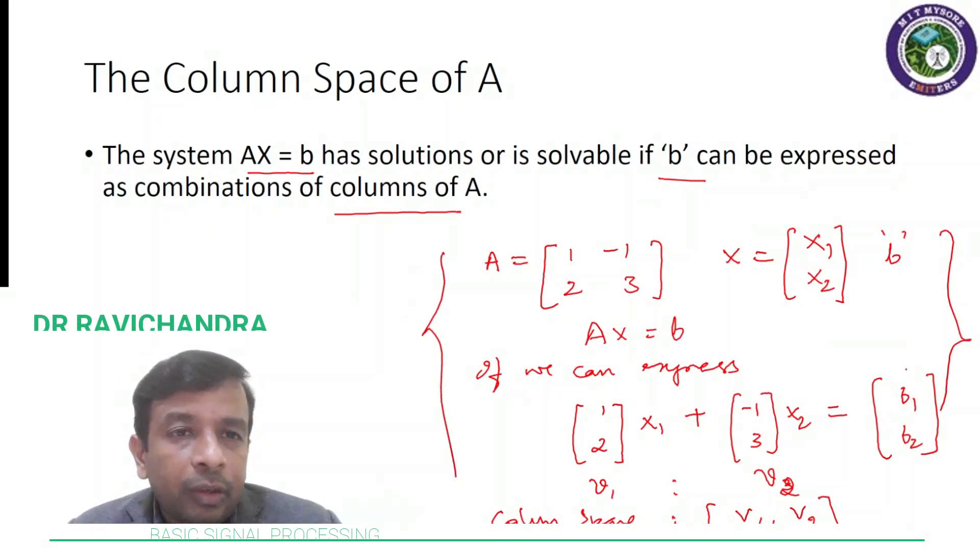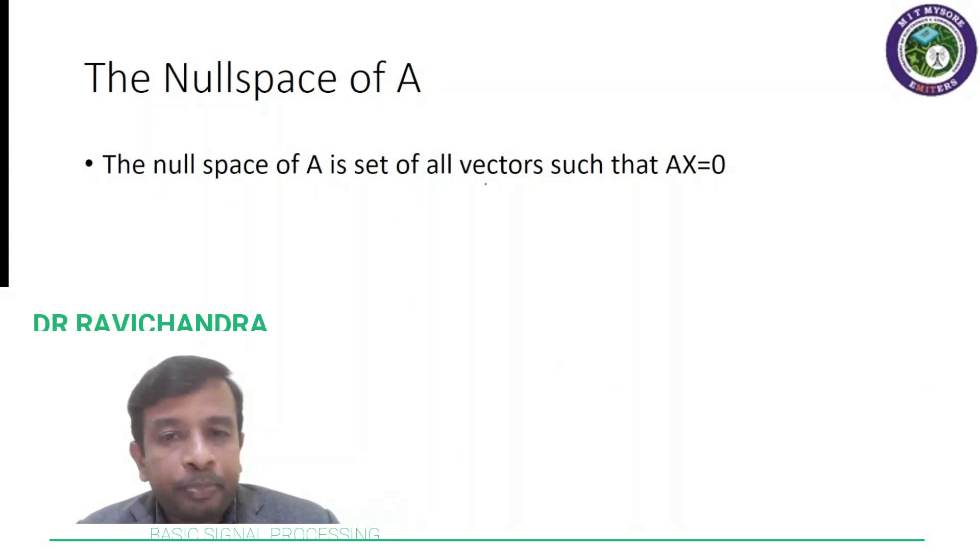Now going further, what is null space of A? So if I have to consider the set of all vectors such that AX equal to 0, that is our B vector is a null vector here, so AX equal to 0, then we call that space or that set of vectors to be null space of A.